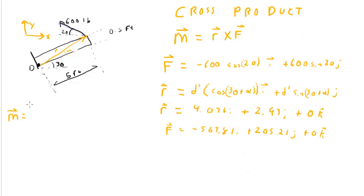M. To do the cross product, we take the determinant of this matrix, i, j, k, 4.076, 2.930, minus 563.8, 205.210. And the way I do this is I just continue that over here, right? 4.076, 2.93, minus 56.7.8, 205.21.